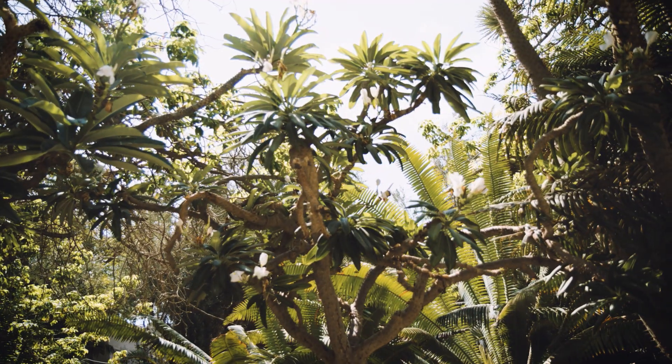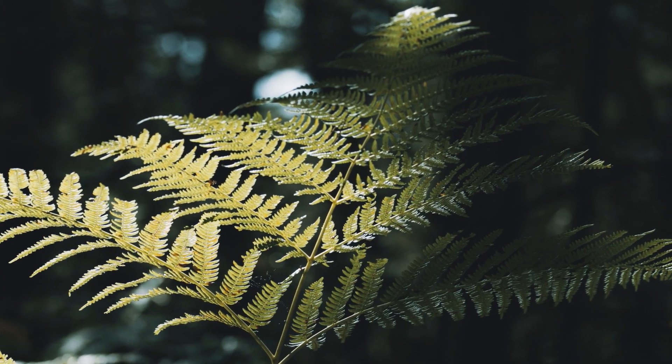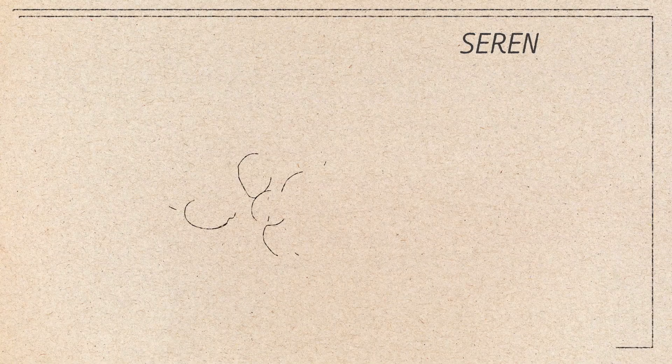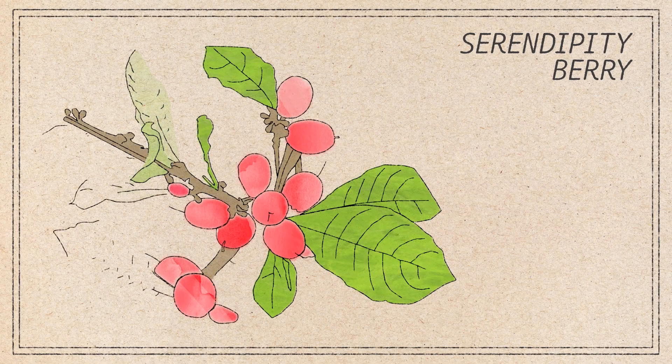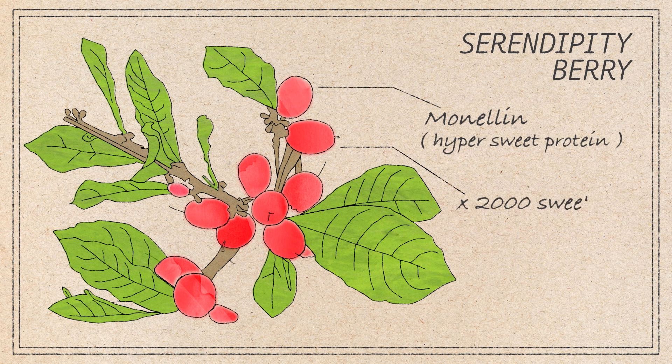We're inspired by nature in two different directions. On one hand, along the equatorial belt, there are hypersweet proteins. Monilin is a hypersweet protein which in nature is around 2,000 times sweeter than sugar.